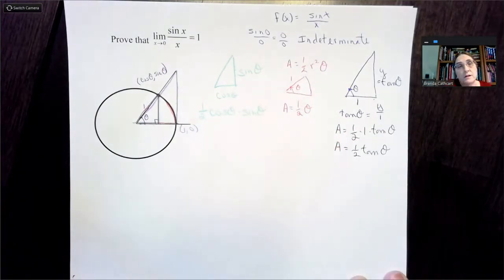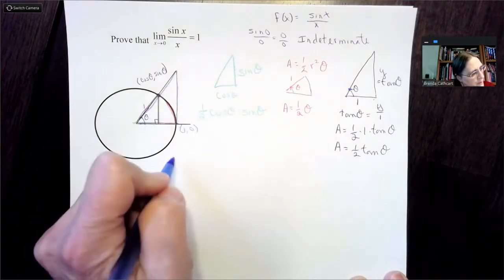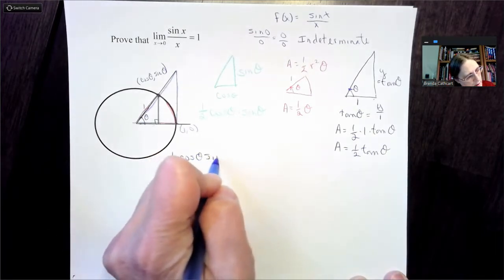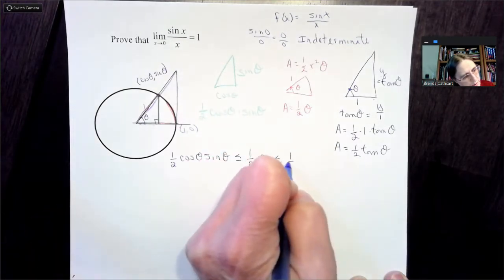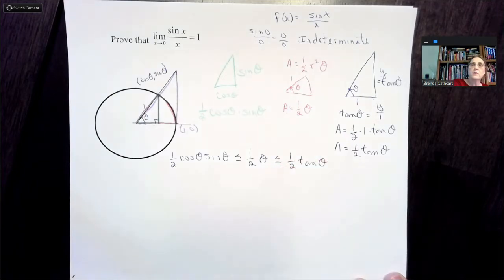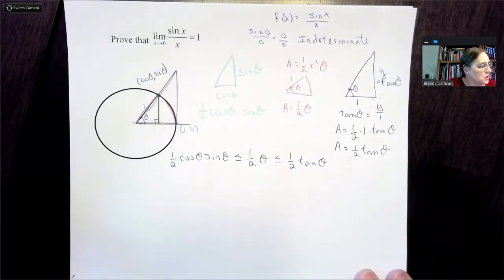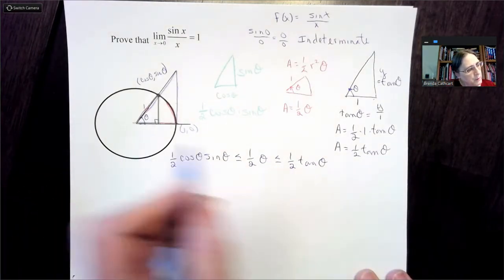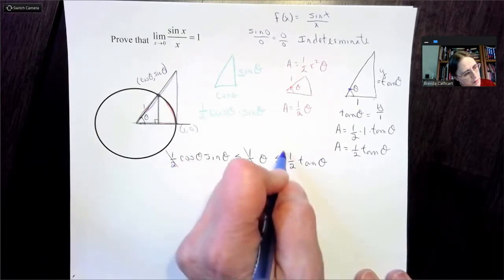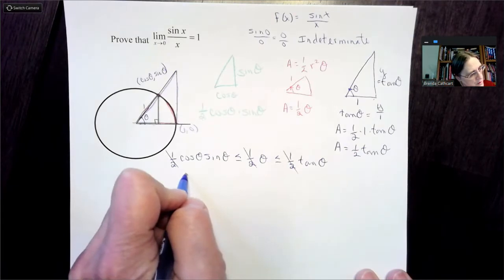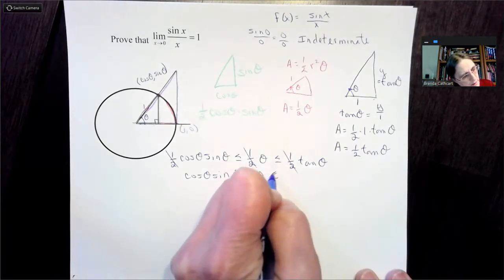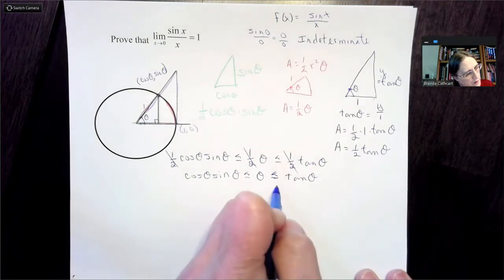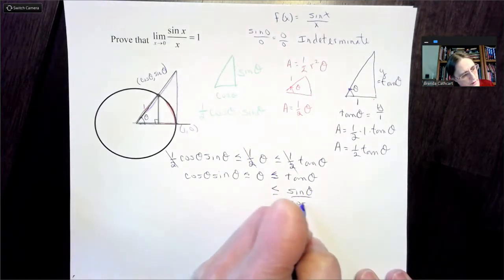We know the ordering of these areas: ½ cos θ sin θ ≤ ½θ ≤ ½ tan θ. We can multiply all three parts by 2 to eliminate the ½, giving us: cos θ sin θ ≤ θ ≤ tan θ. And of course tan θ can also be written as sin θ / cos θ.